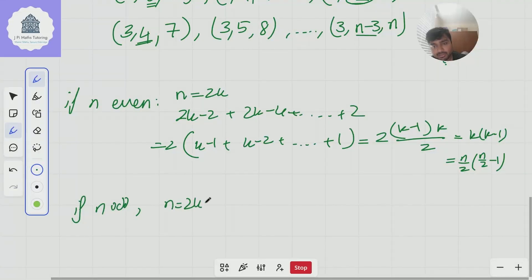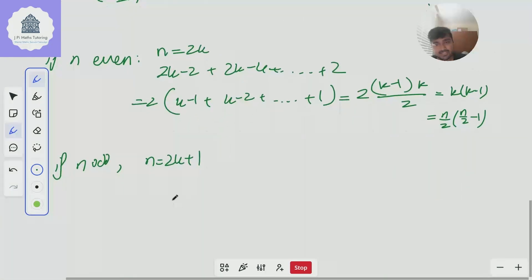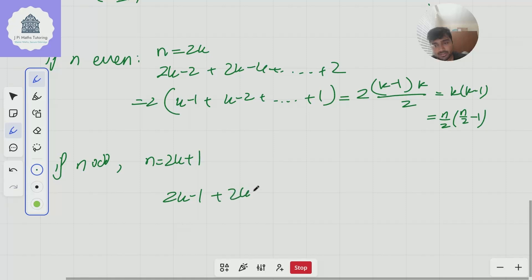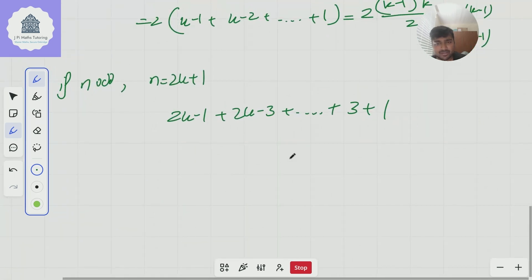Well n is then two k plus one for some integer positive technically yeah positive integer k because n is at least three. And we do the same thing so we're going to get n minus two so that would be in this case two k minus one plus two k minus three and so on all the way down to three plus one. And now this expression here you can evaluate in a few different ways but it's just an arithmetic sum at the end of the day.